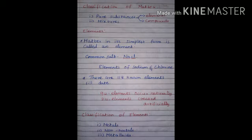Next we are going to see about the classification of matter. Matter is classified into two broad categories: pure substance and mixture. Pure substances are further divided into elements and compounds. Matter in its simplest form is called an element. We use many elements in our daily life. Common salt consists of the elements sodium and chlorine. There are 118 known elements to date — 94 occur naturally while 24 have been created artificially in the laboratory.